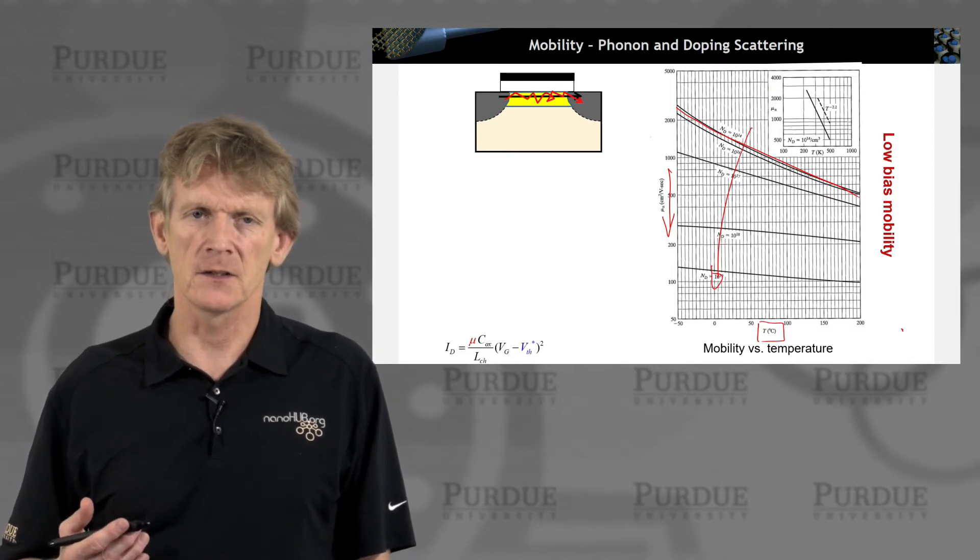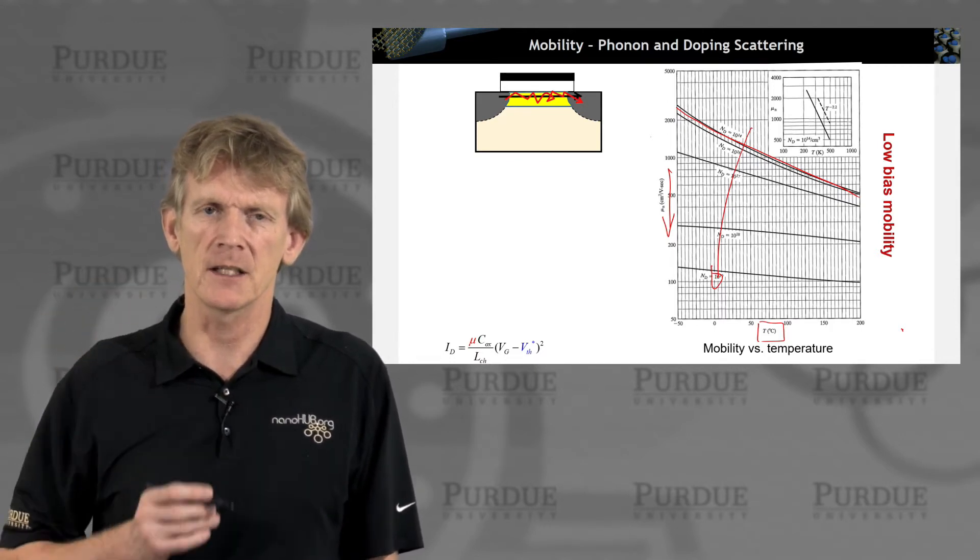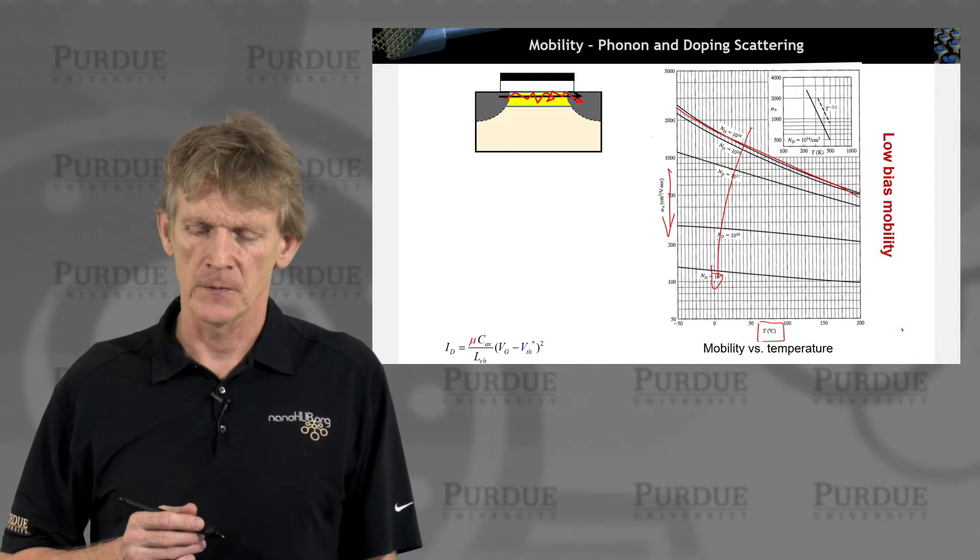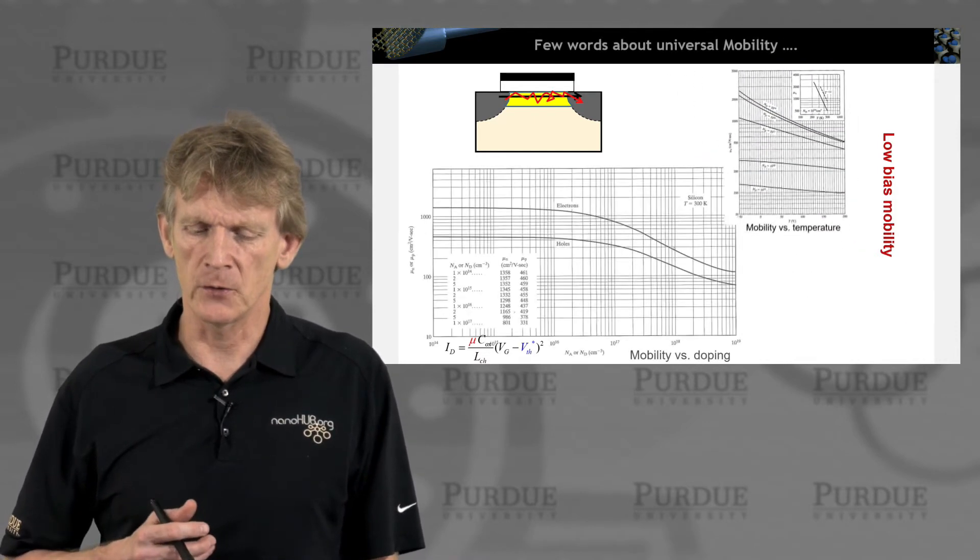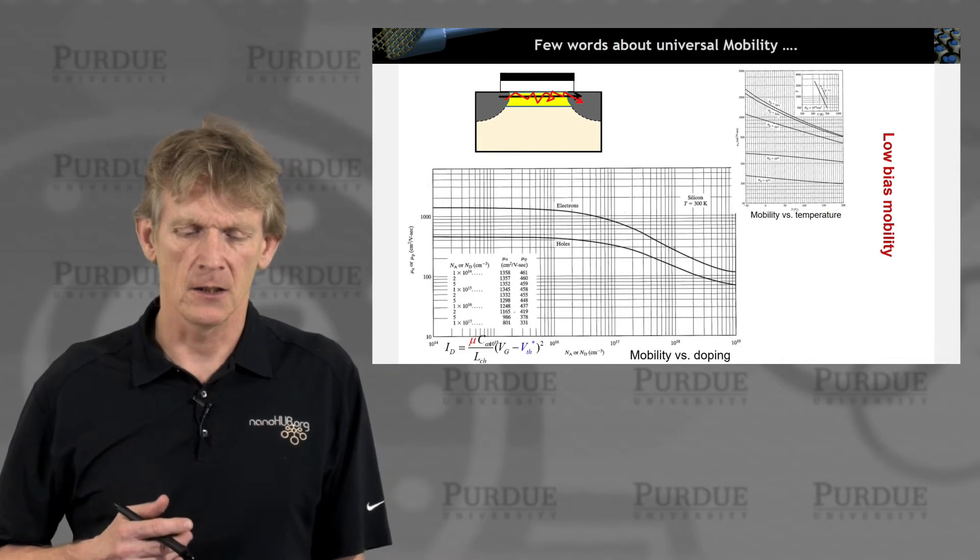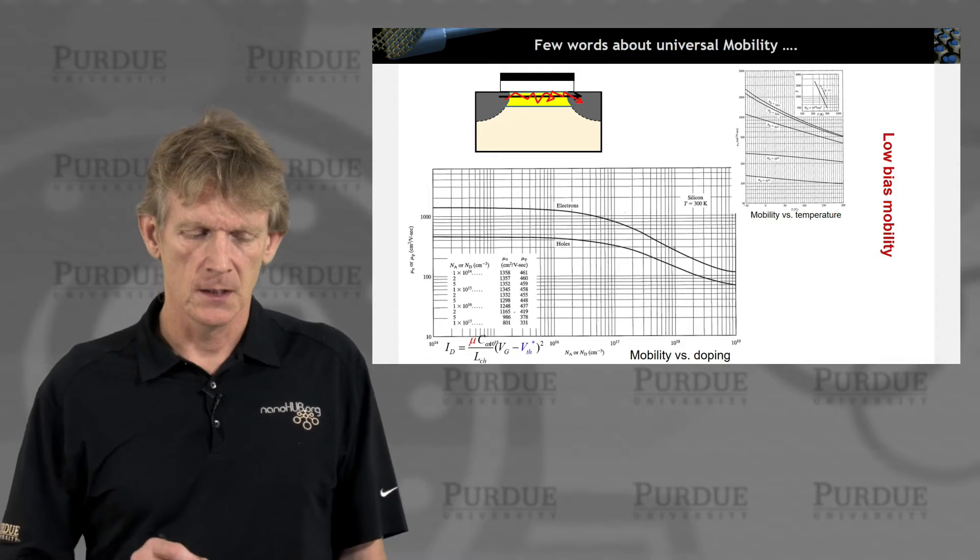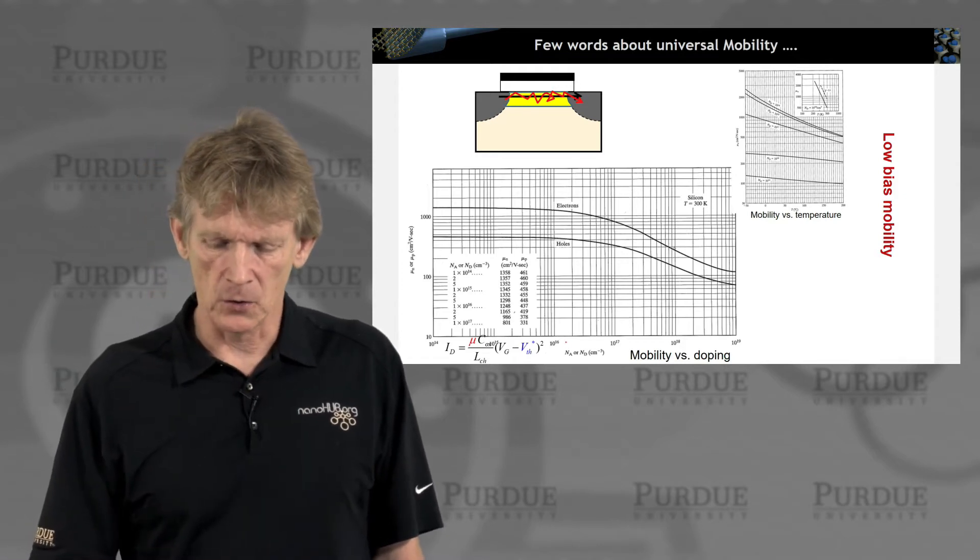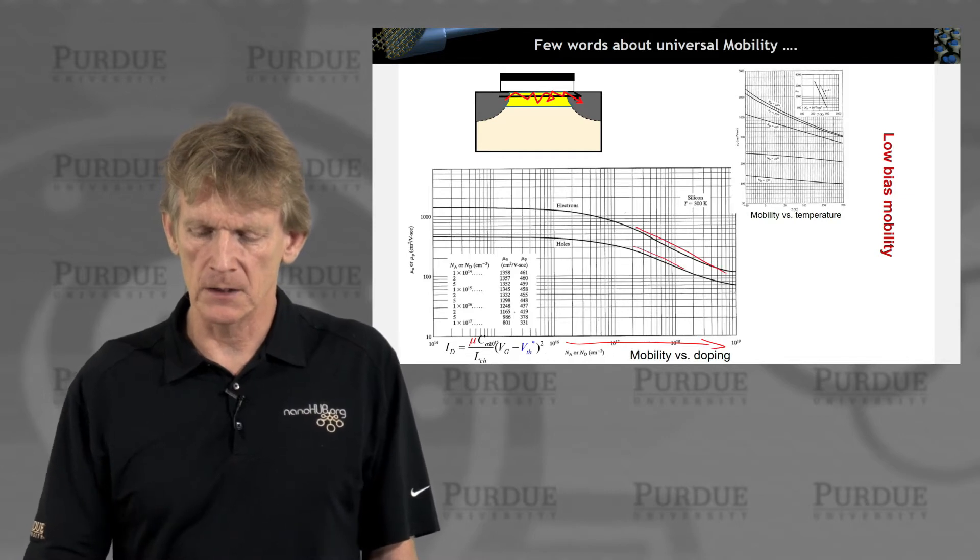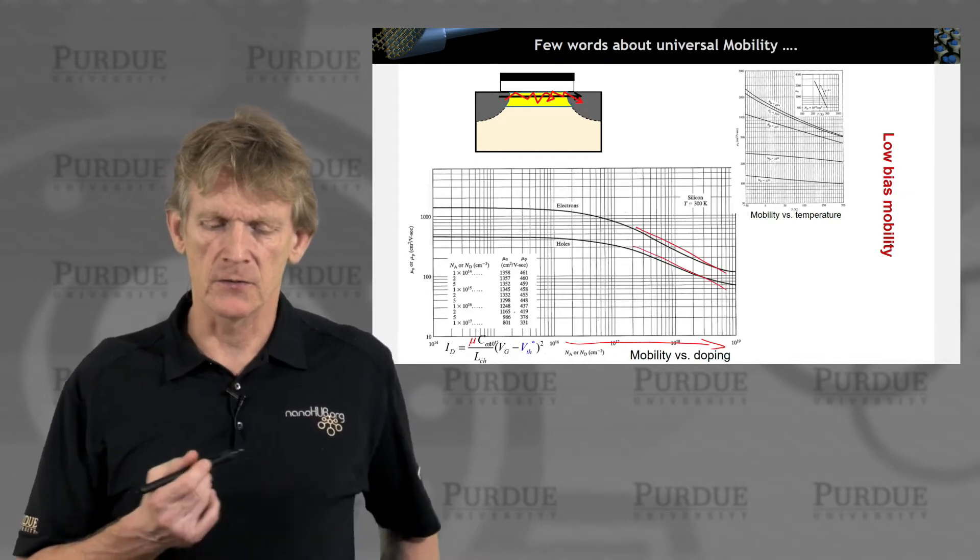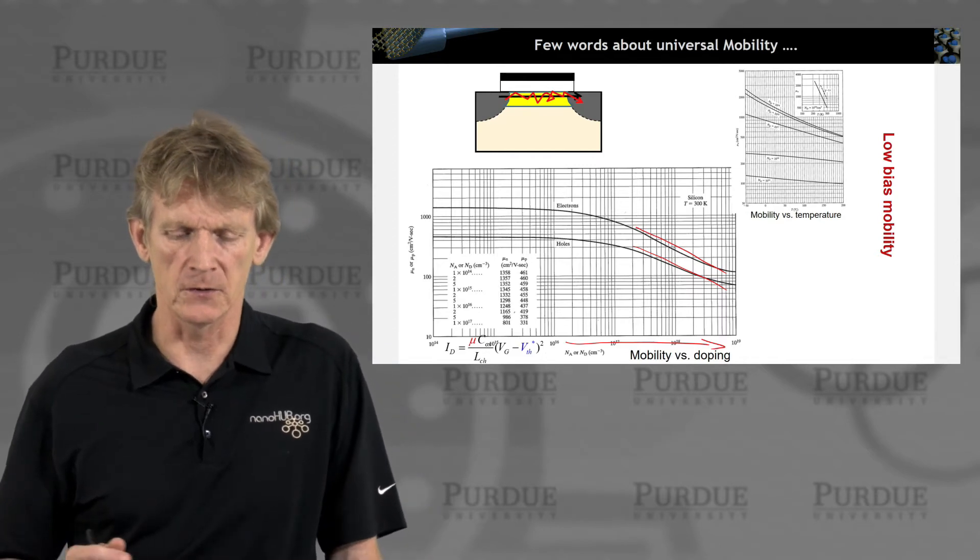You can think of these as coulombic potentials that the electron sees and they have to navigate those potentials. And the more potentials you have, the lower the mobility. So we had seen that before. And here's a sketch of this mobility. So as you increase the doping this way, the mobility goes down like this. And here's a sketch from the textbook for electrons and for holes for different dopants.